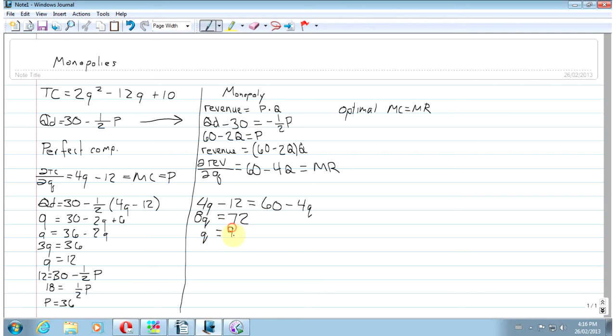Q equals 9. Okay. So we've got our quantity, right? And now to find our price, we plug that right back into the demand function. So we have that 9 equals 30 minus 1.5 price. All right. So negative 21 equals negative 1.5 price. The price is 42. Okay. So he produces three fewer board games and he charges $6 more per board game.